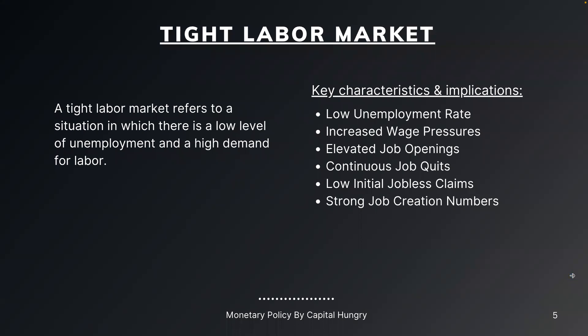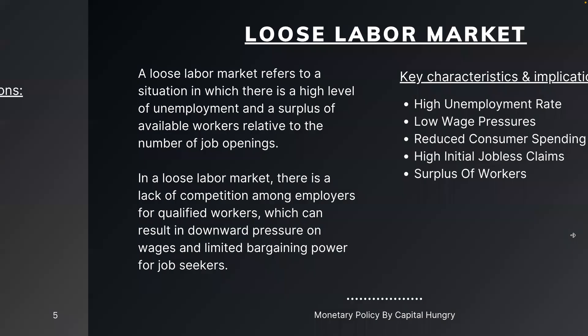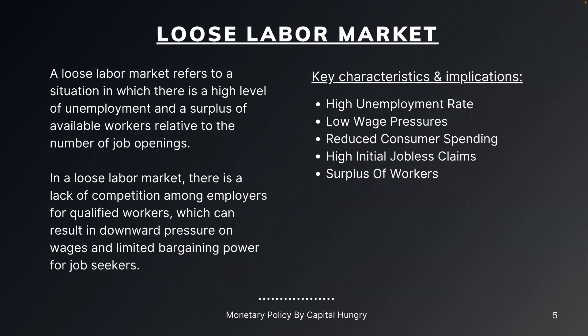A tight labor market refers to a situation in which there is a low level of unemployment and high demand for labor. Key characteristics include low unemployment rate, increased wage pressures, elevated job openings, continuous job quits, low initial jobless claims, and strong job creation numbers. Meanwhile, a loose labor market refers to a situation with high unemployment and a surplus of available workers relative to job openings. This results in downward pressure on wages and limited bargaining power for job seekers. Key characteristics include high unemployment rate, low wage pressures, reduced consumer spending, high initial jobless claims, and surplus of workers.